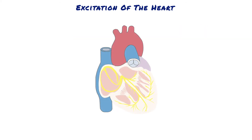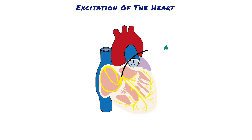The atrial conductive system is organised so that the cardiac impulse does not travel from the atria into the ventricles too rapidly. This delay allows time for the atria to empty their blood into the ventricles before ventricular contraction begins. It is primarily the AV node and its adjacent conductive fibres that delay this transmission into the ventricles.